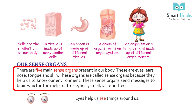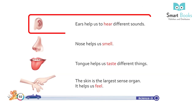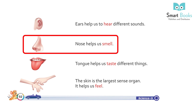The five sense organs are eyes, ears, nose, tongue, and skin. These organs are called sense organs because they help us to know our environment. These sense organs send messages to the brain, which in turn helps us to see, hear, smell, taste, and feel.